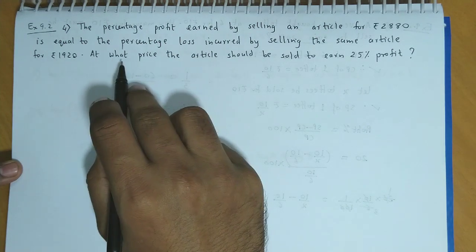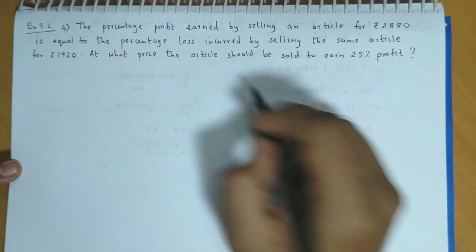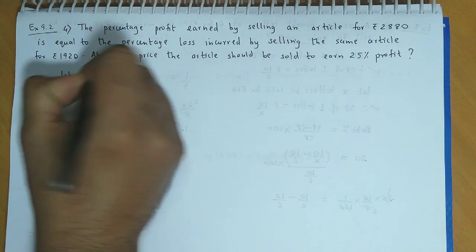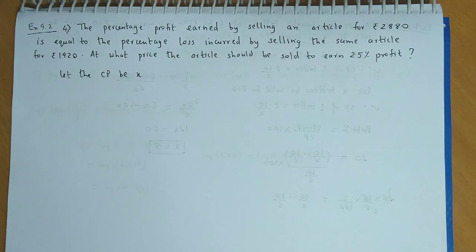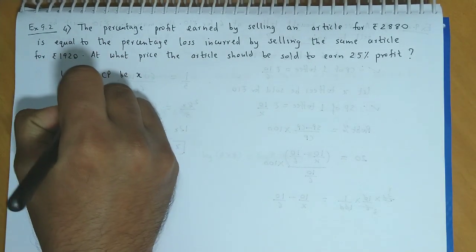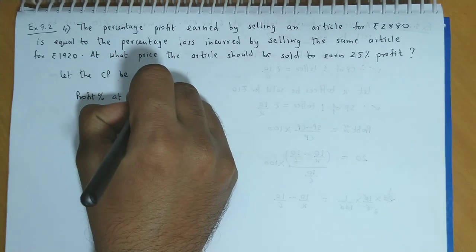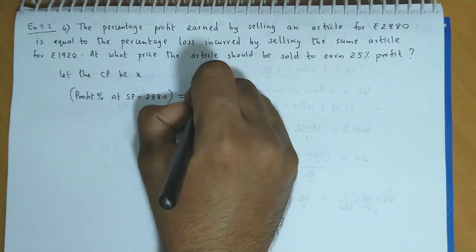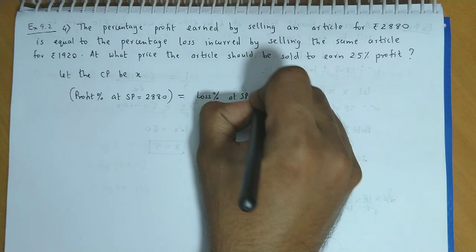And we have been asked, at what price the article should be sold to earn 25% profit? अब यह ढूंढने के लिए पहले तो हमें cost की जरूरत पड़ेगी. So, let the cost price of the article be x. अब यहां पर दिया हुआ है: profit percentage at selling price equal to 2880 is equal to the loss percentage at selling price equal to 1920.